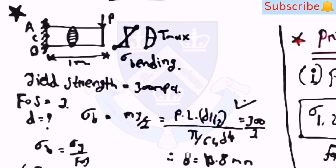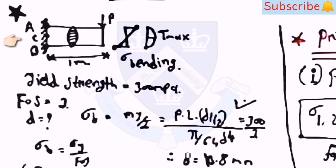This example gives you the idea of why we don't use principal stress equations or theory of failure equations in every example. In the example, a load is acting on the end of a beam, yield strength is given as 300 MPa, FOS is equal to 3, and we need to find the value of d.